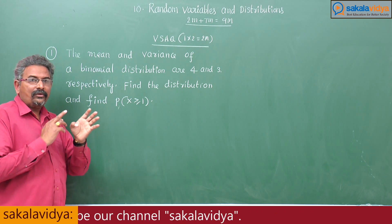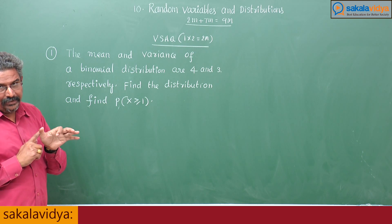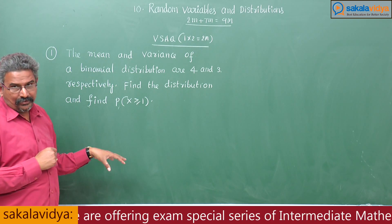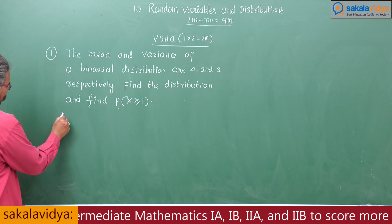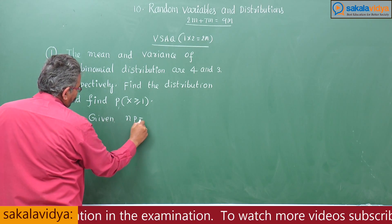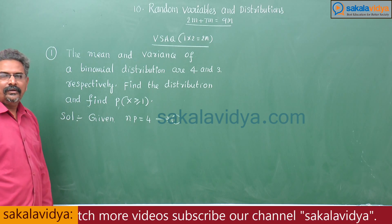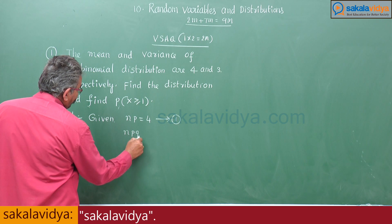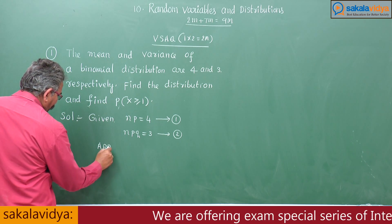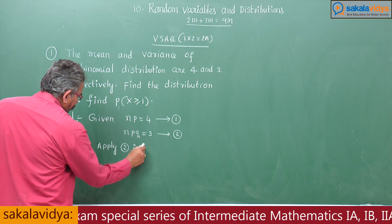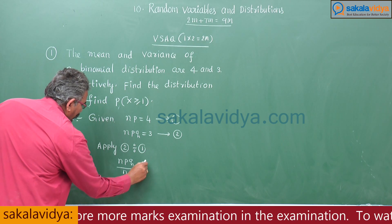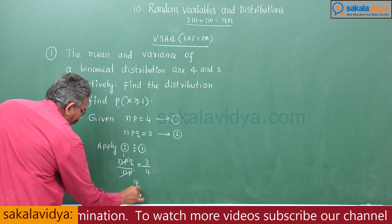To find this, we require the parameters of the binomial distribution, which are n and p. Given mean: np = 4 (equation 1). Given variance: npq = 3 (equation 2). Dividing equation 2 by equation 1, we get npq/np = 3/4. The np cancels, giving us q = 3/4.